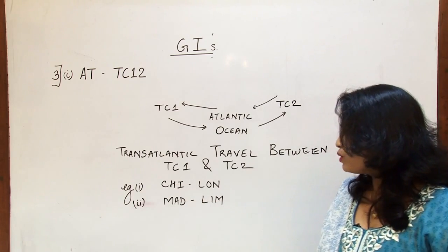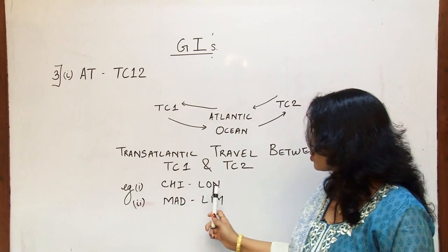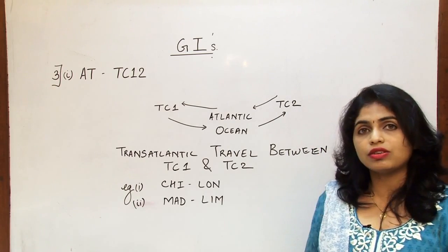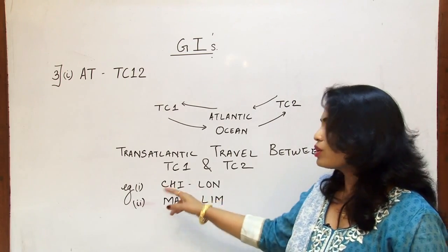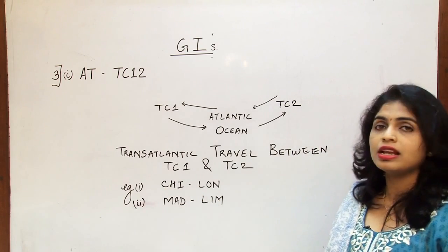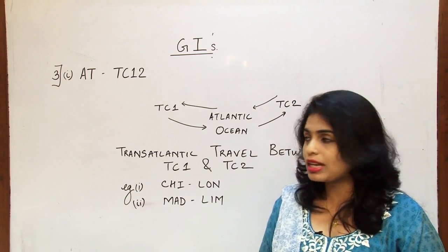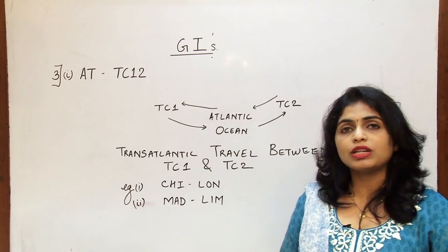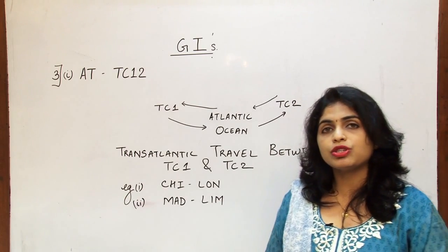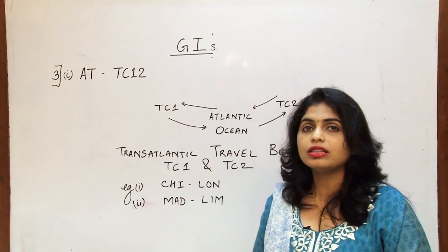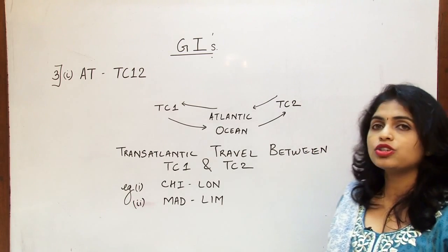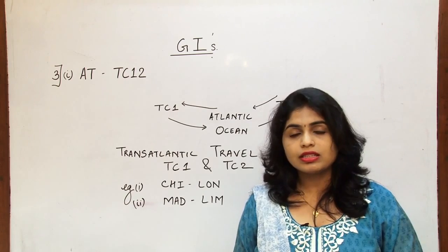The first example is Chicago to London — Chicago is in the USA (Area 1), London is in the UK (Area 2), so the flight crosses the Atlantic and the global indicator is AT. Another example is Madrid, which is in Spain (Europe, Area 2), to Lima, which is in Peru (South America, Area 1) — again Area 2 to Area 1, so the GI is AT.